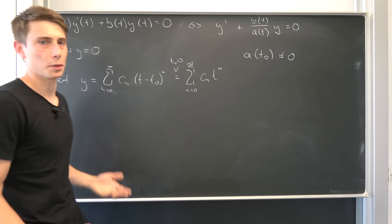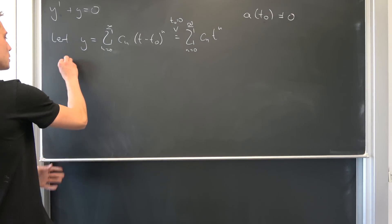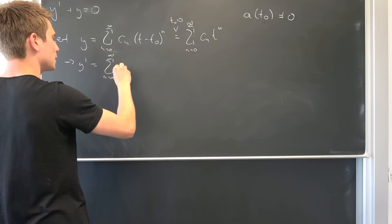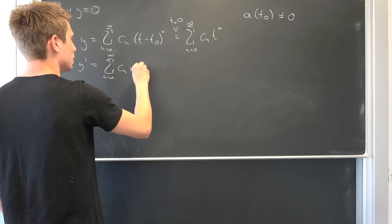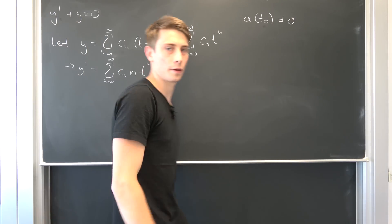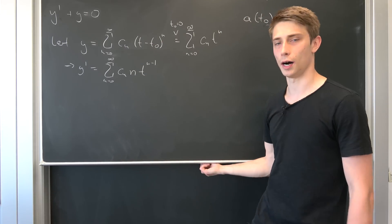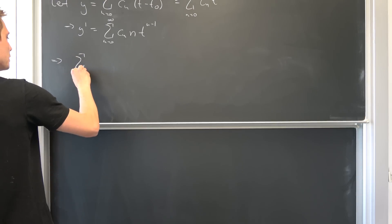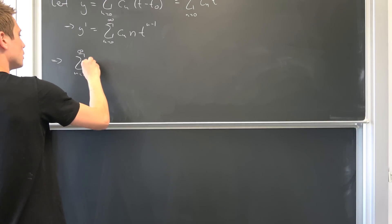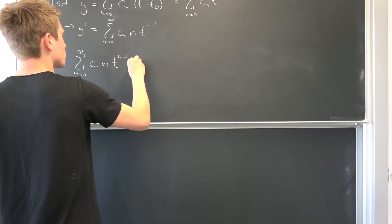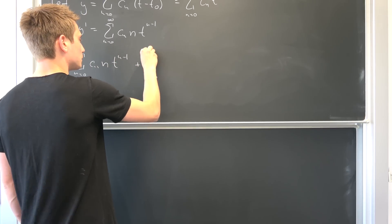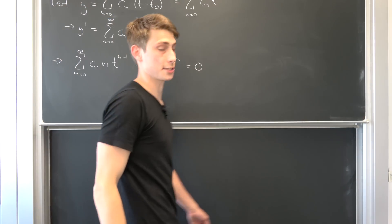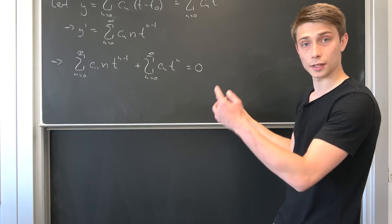So that also means our t0 equals 0, that our series representation going from n equals 0 to infinity is now cn times t to the nth power. There was fun playing around, now let's get to business. We also need our y' because we want to plug this into our equation. So that also means that y' is nothing but this infinity sum times cn and then we have n t to the n-1.